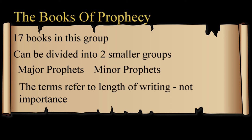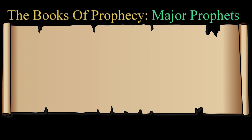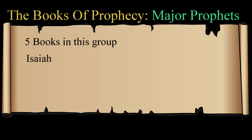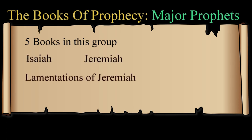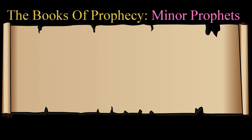Let's take a look at both of these groups. The major prophets: there are five of these books, which in order are Isaiah, Jeremiah, Lamentations (or the Lamentations of Jeremiah), Ezekiel, and Daniel.